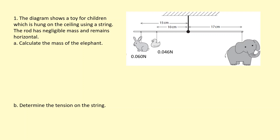In this example we have a diagram showing a toy for children hung on the ceiling using a string. The rod has negligible mass and remains horizontal. We need to calculate the mass of the elephant. The rabbit and the duck are going to pull down on the rod, and so is the elephant. I need to choose where to take moments about — I can apply the principle of moments because the rod remains horizontal.